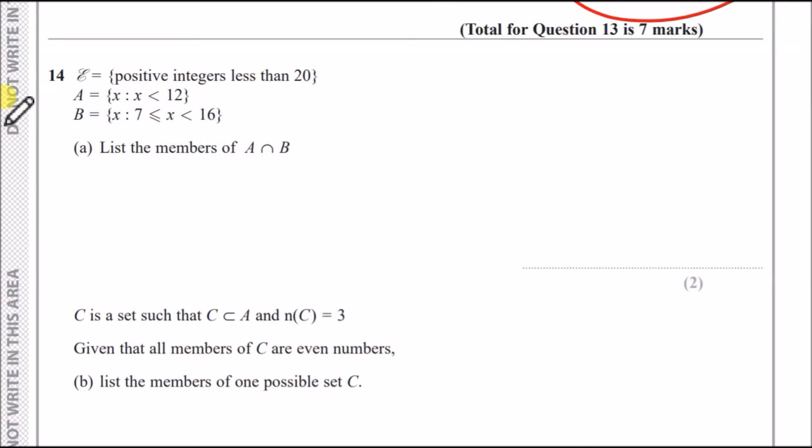Now, problem 14. It says that we've got this symbol, which is actually called the universal set, by the way. This means all the numbers we're allowed to use in this question. So it says we can only have positive integers less than 20. Positive integers means whole numbers which are positive, like 1, 2, 3, all the way up to 18, 19, but not 20. So these are the 19 numbers we're going to use.